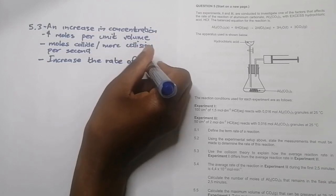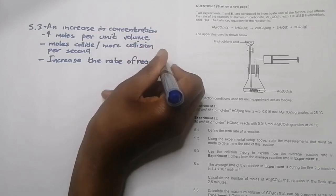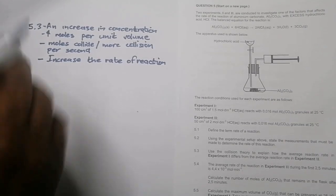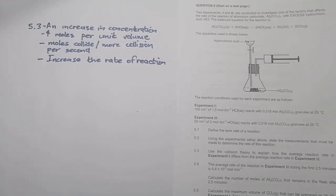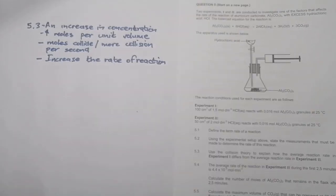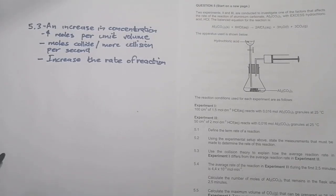In summary: an increase in concentration increases the number of moles per unit volume; more moles are able to collide frequently; more collisions take place per second; and therefore the rate of reaction increases.